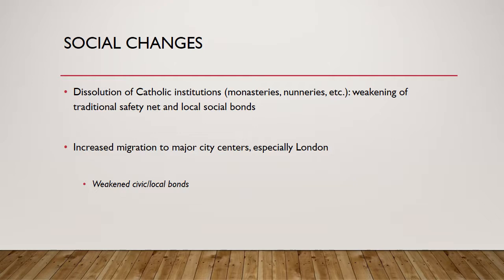Social changes also played a role: the dissolution of Catholic institutions like monasteries, nunneries, and various churches — which Henry VIII and his son Edward VI dissolved — weakened many local bonds and eradicated the traditional safety net that these institutions had provided for the poor and indigent. This further weakened connections within local communities. Alongside economic changes, it led to increased migration to major city centers, especially London, which is of course where the Renaissance stage really took off in England.